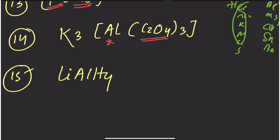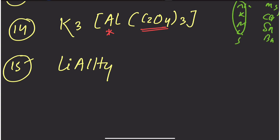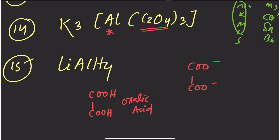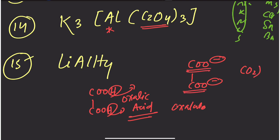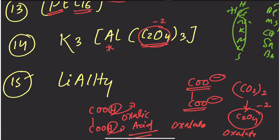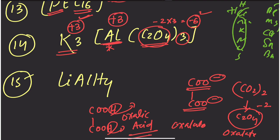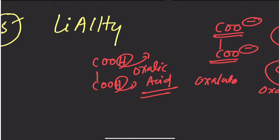C₂O₄²⁻ is the oxalate ion, derived from oxalic acid (COOH-COOH). When oxalic acid loses both hydrogen atoms, we get the oxalate ion with two COO⁻ groups. C₂O₄²⁻ carries a charge of −2. If there are 3 oxalate ligands, total charge is −6, and then adding the cation gives the oxidation state calculation.